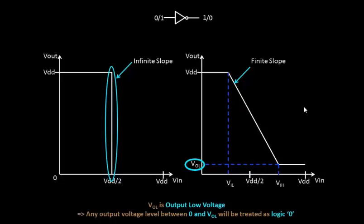Hello everyone. In the last video we saw the inferences from this particular curve — let's try to do a meaningful inference again. Any voltage which lies between 0 and VIL will be recognized as logic 0. If VDD is 1V, then VIL is 250mV, so any voltage at the input of this inverter between 0 and 250mV is recognized as logic 0.